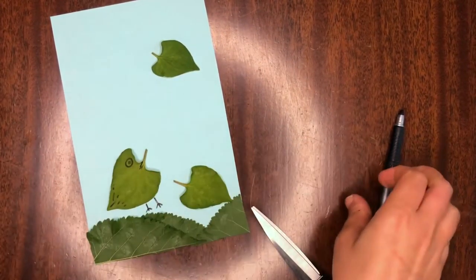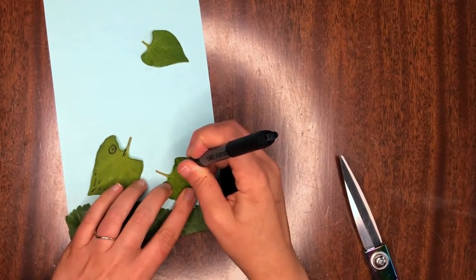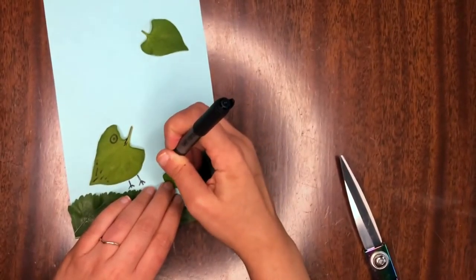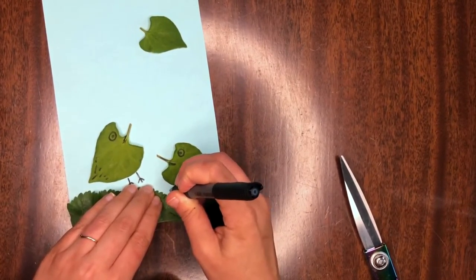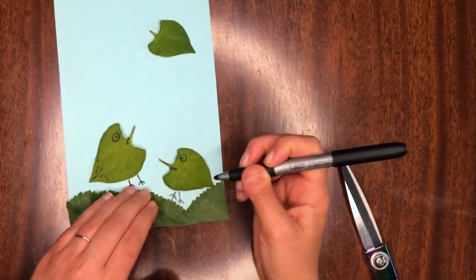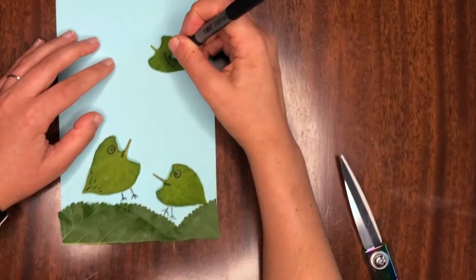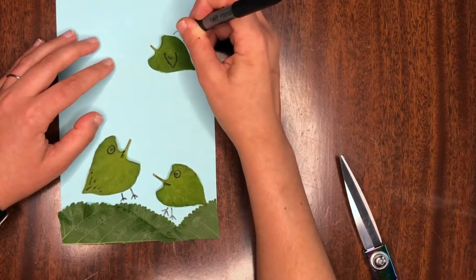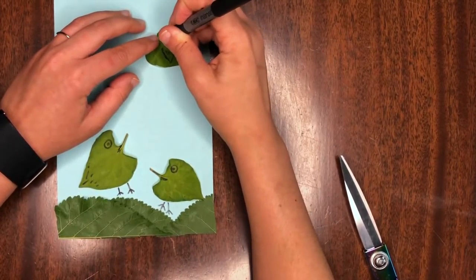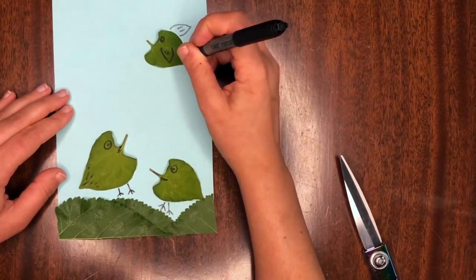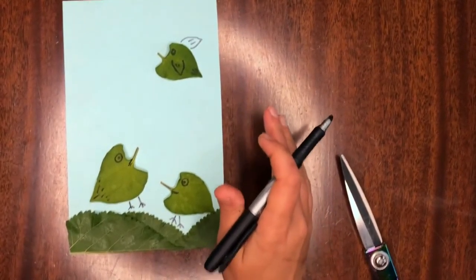So now that I'm done gluing my leaves, I'm going to go ahead and add my eye to this bird. My little feet. Maybe to this one I add a wing because it's flying.